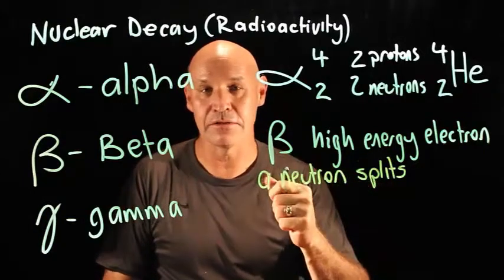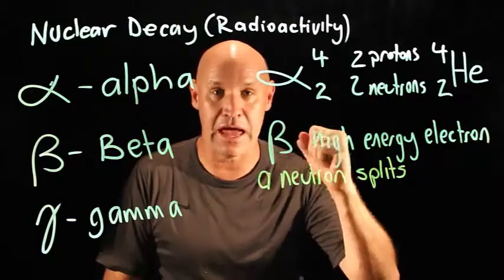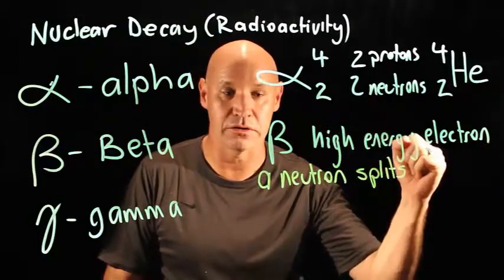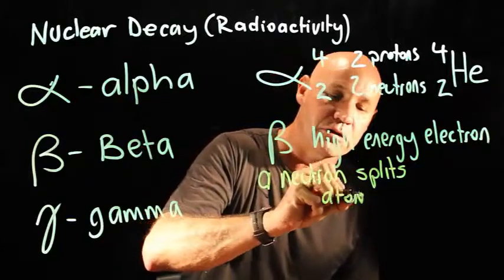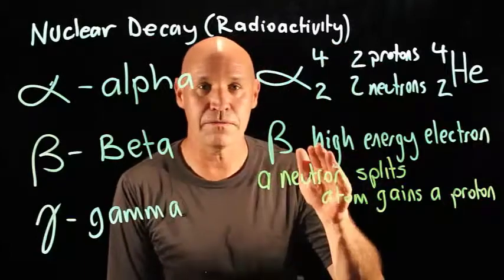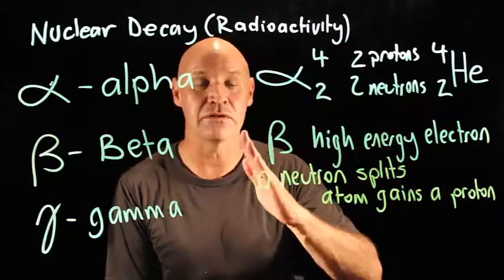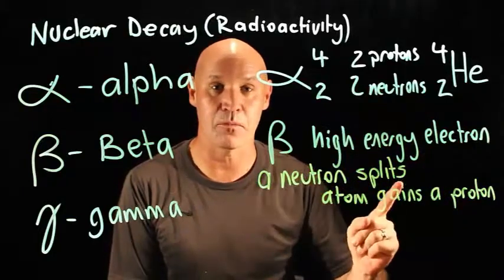So that means that the atom gains an extra proton. The atom gains a proton. So again, it's a different type of element, because it's gained one proton. So its atomic number goes up by one.